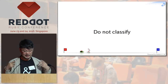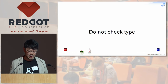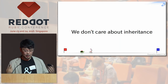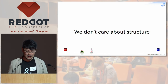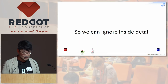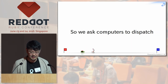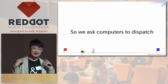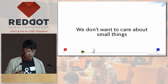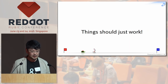In duck typing, we do not classify objects like animal, mammal, human type hierarchies. We do not check types — we just ask the object to behave. We don't care about inheritance, we don't care about structure, we just care about how it behaves. We can ignore inside detail and ask the computer to dispatch — to pick the proper method for that particular object. Things just work.